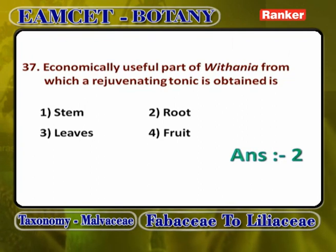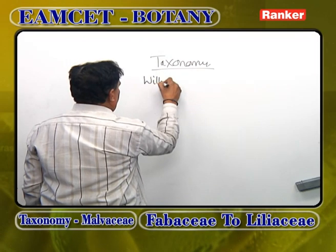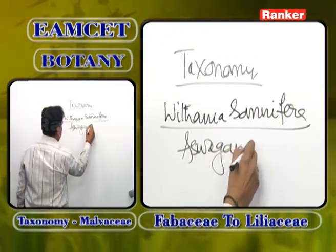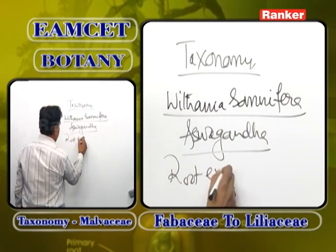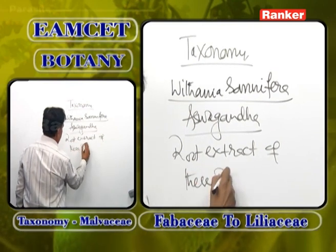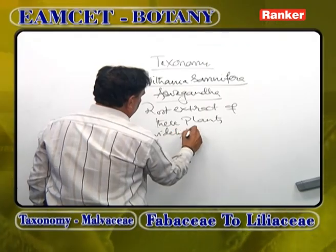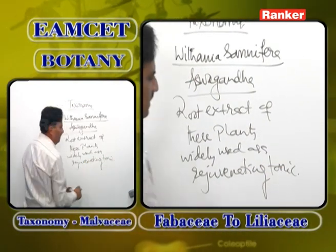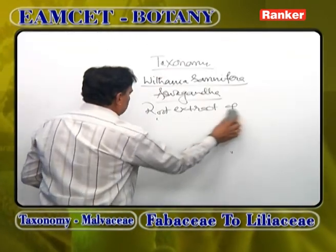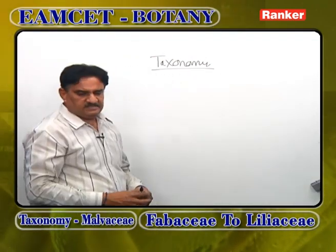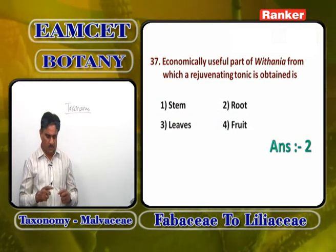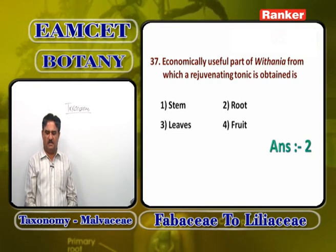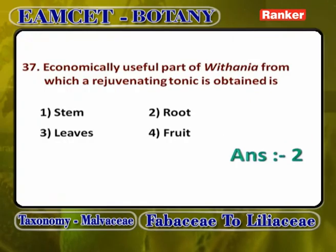Economically useful part of Withania from which rejuvenating tonic is obtained: Withania somnifera (Ashwagandha) belongs to Solanaceae. The root extract of this plant is widely used as a rejuvenating and energy-providing tonic. Answer is root — second option.